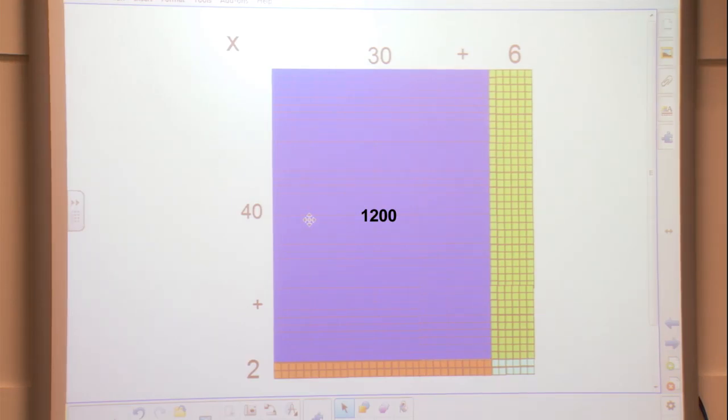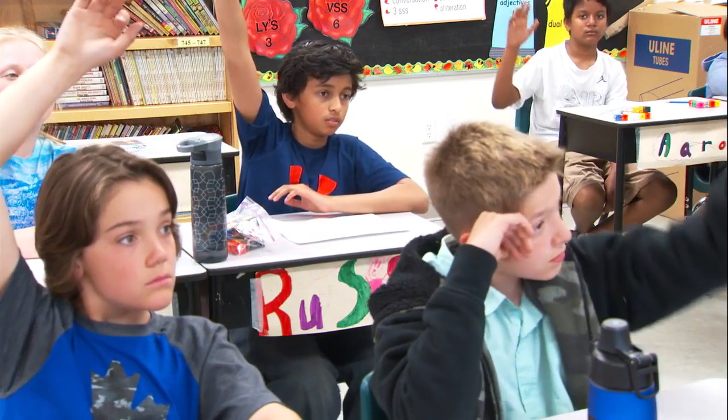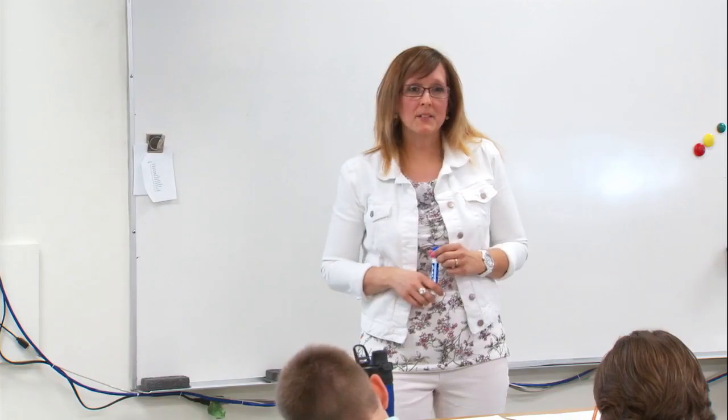To complete the question we also need to multiply the simple equations of 30 times 2, 40 times 6, and 6 times 2. By adding these products together we can easily determine the solution to our question. Does anyone know what that total would be? Rusev? 1,512. Good, 1,512. Good answer, Rusev. Well done.